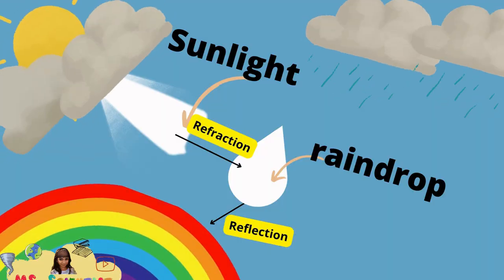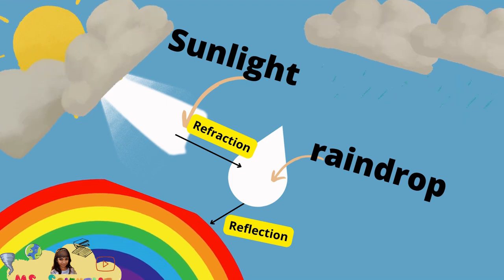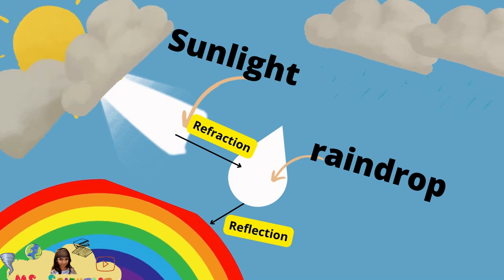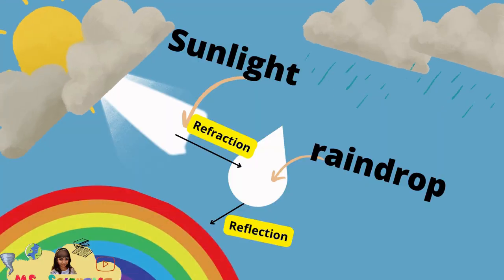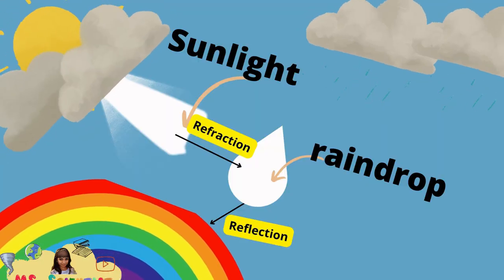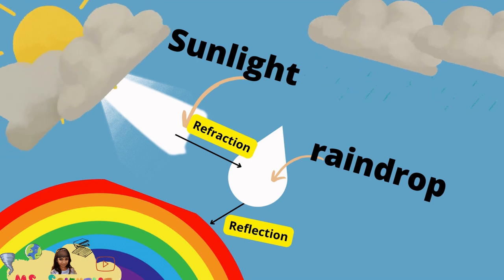Now I'll tell you how it actually works. Small raindrops act like small prisms. The sun's white light passes through them, and when it comes out, it breaks into a band of several different colors. That's how a rainbow forms. A rainbow can only be seen when rain and sun occur at the same time.